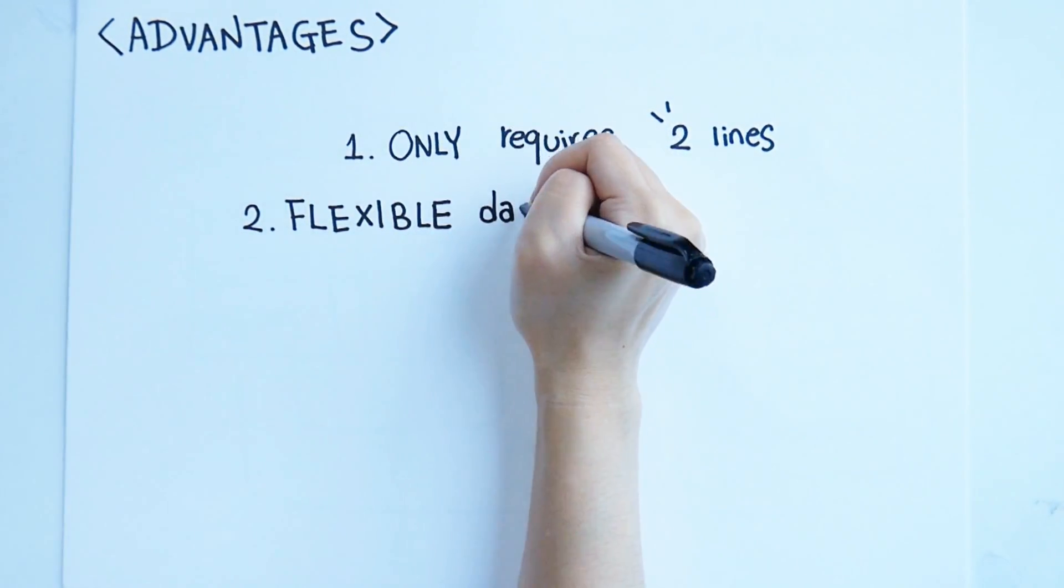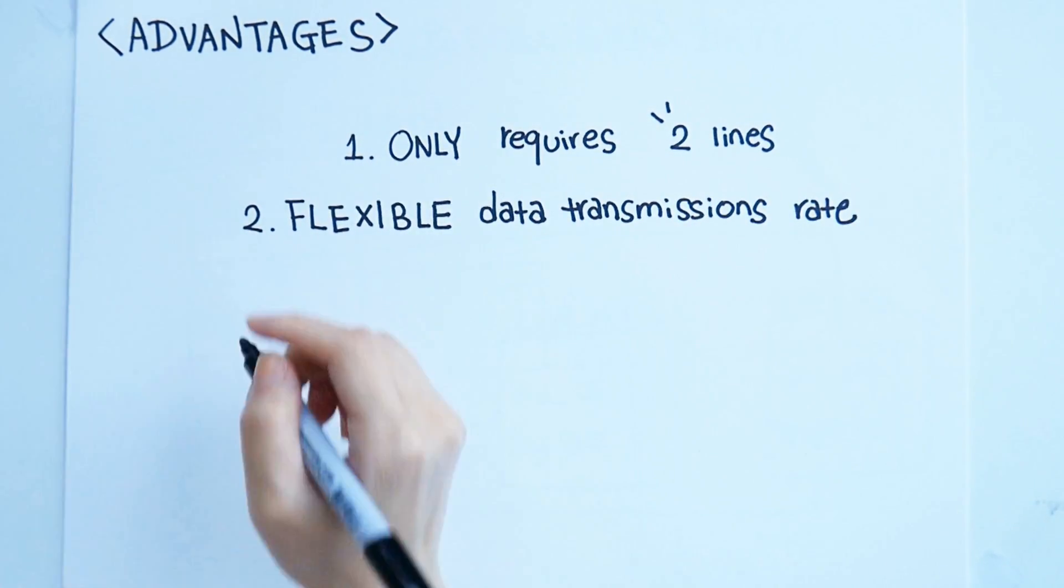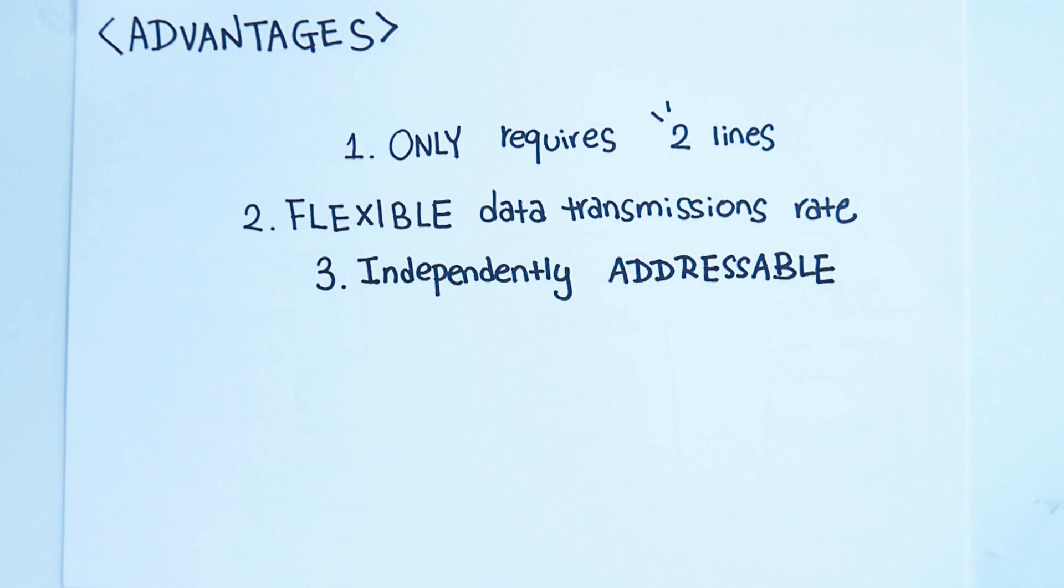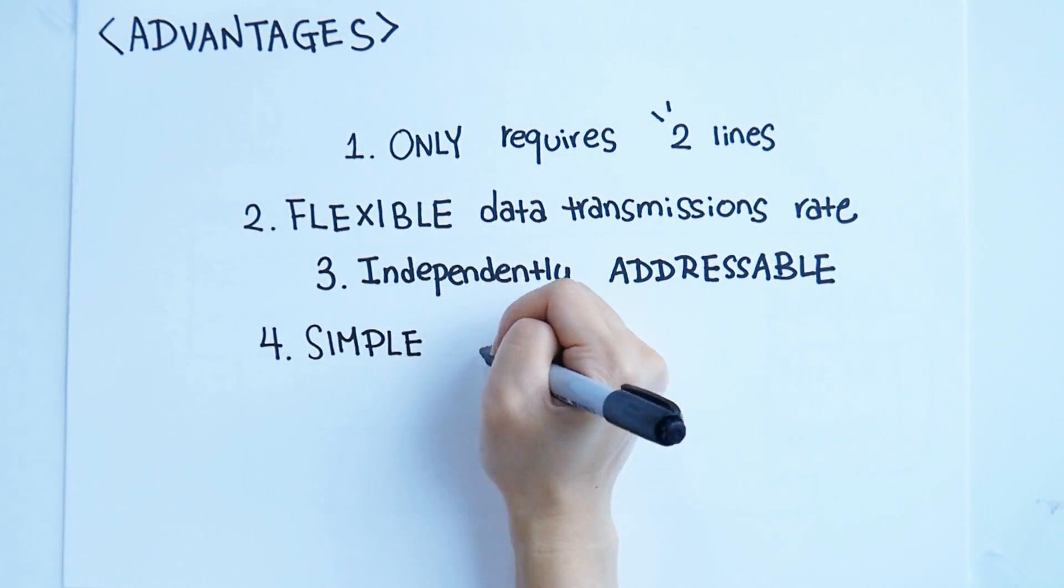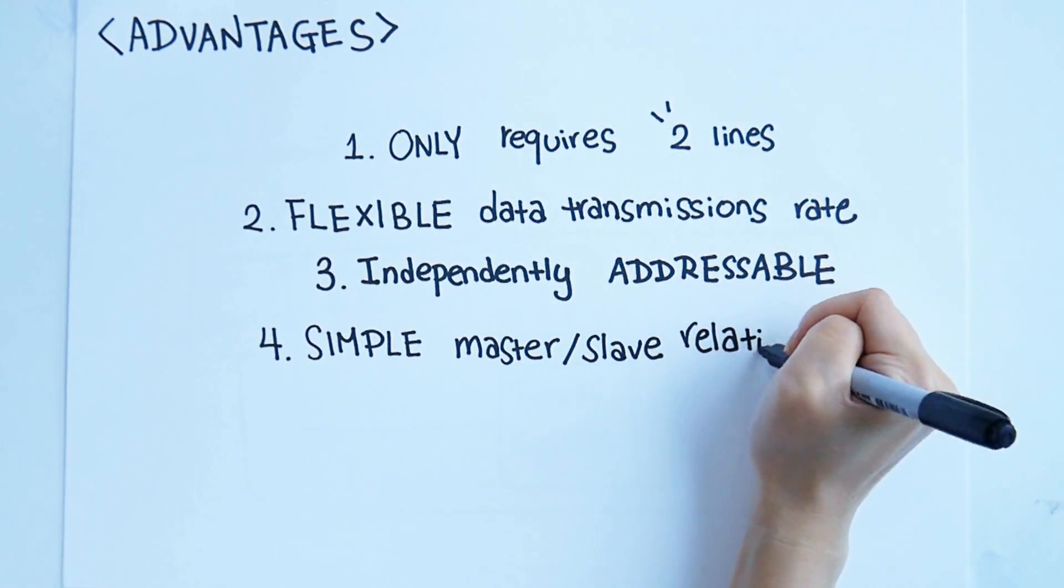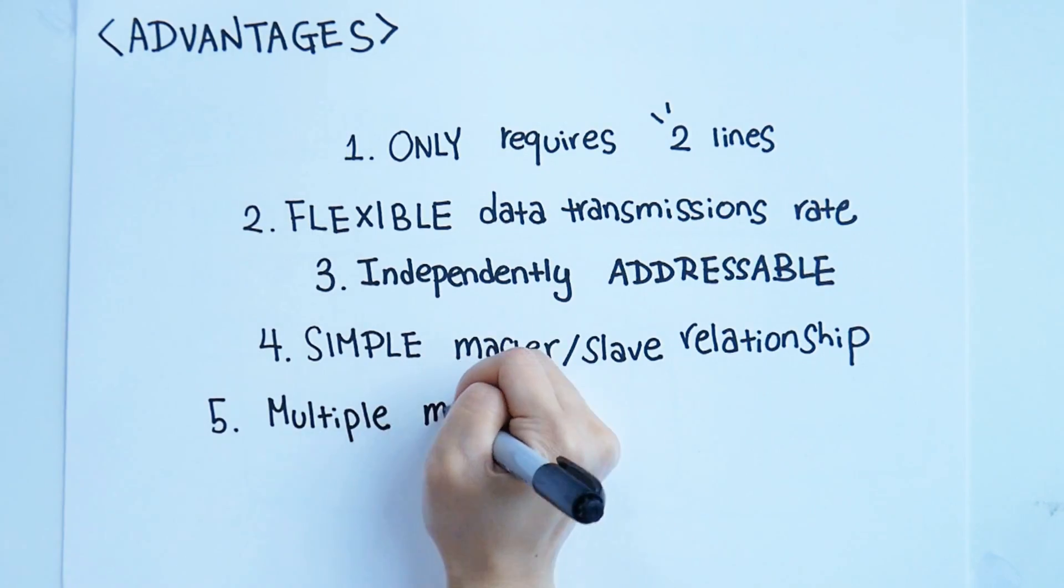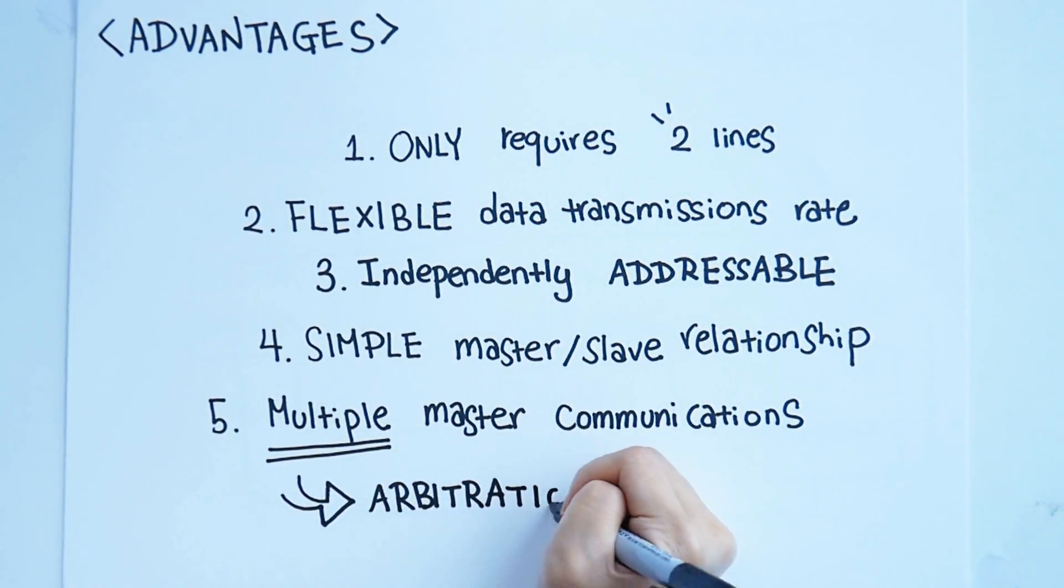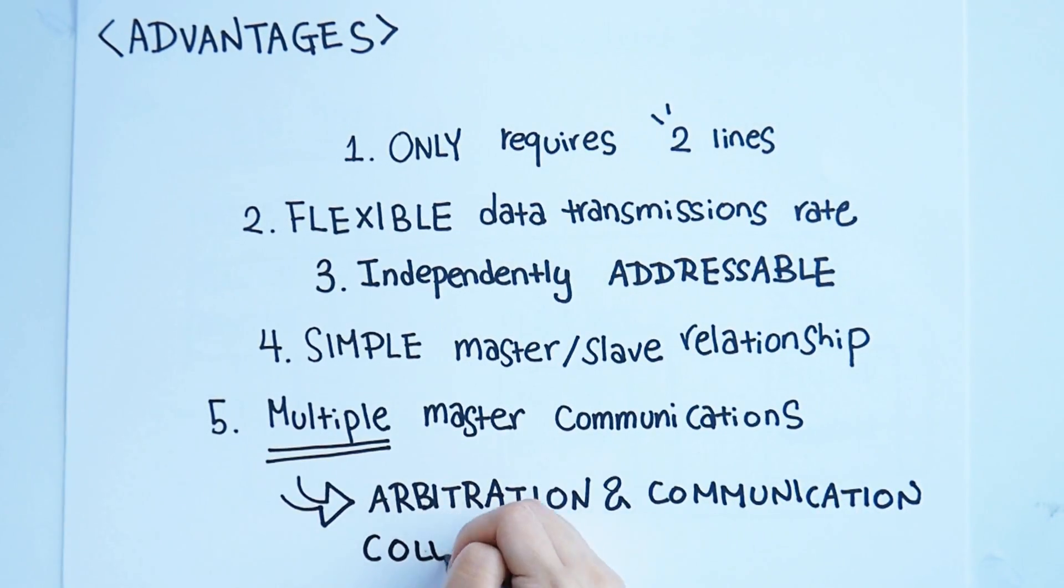Flexible data transmission rates. Each device on the bus is independently addressable. Devices have a simple master-slave relationship. I2C is capable of handling multiple master communications by providing arbitration and communication collision detection.